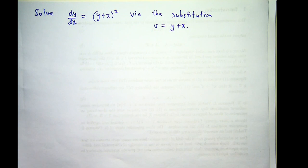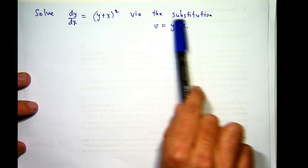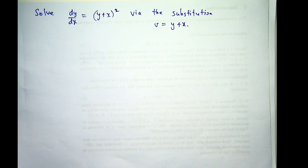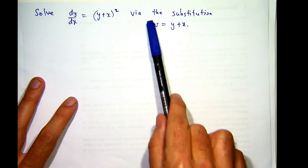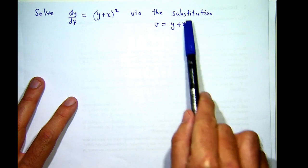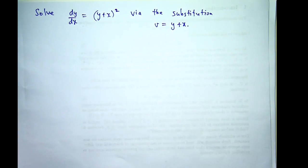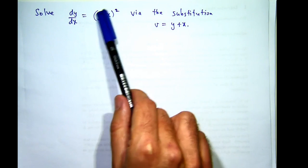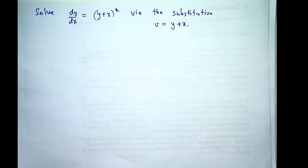All right, so how do we do it? Well, given this substitution, what we'd like to do is to form a new differential equation involving v and x. So we're sort of transforming from a difficult ODE to hopefully a simpler ODE. So what we'd like to do is calculate dy/dx in terms of this, and then substitute this for v and substitute out the dy/dx for something involving dv/dx.